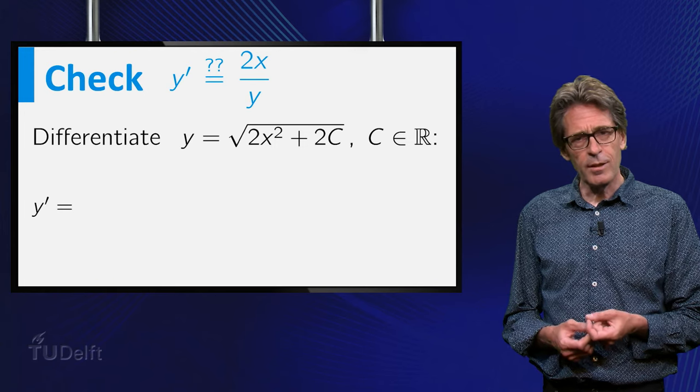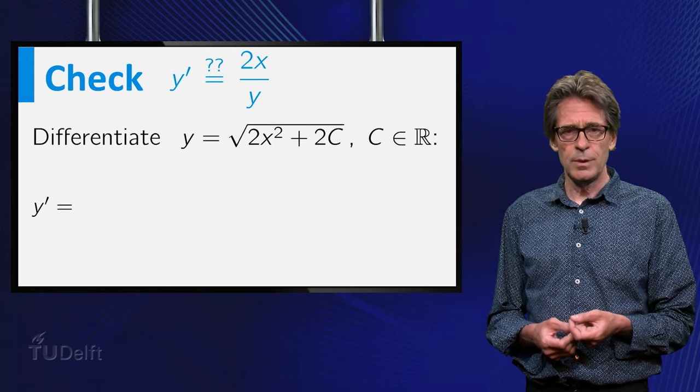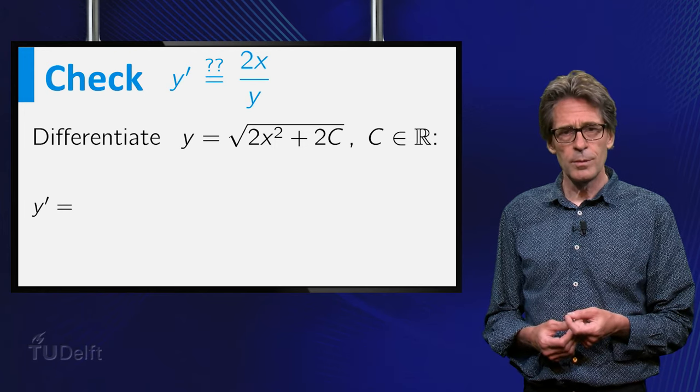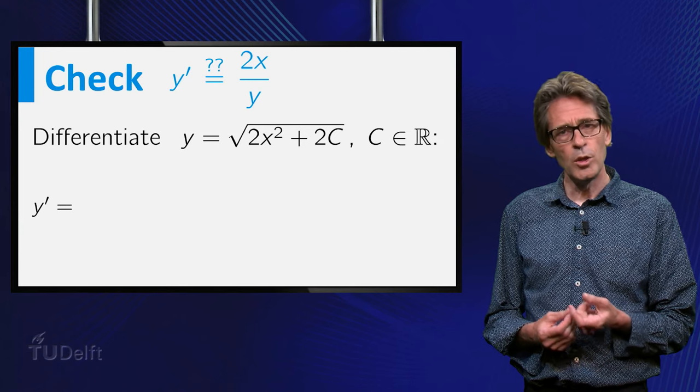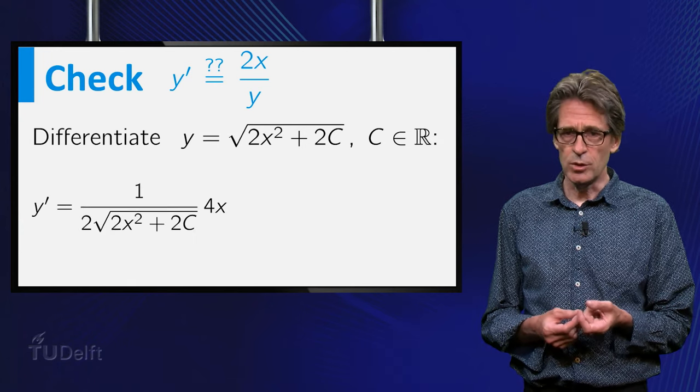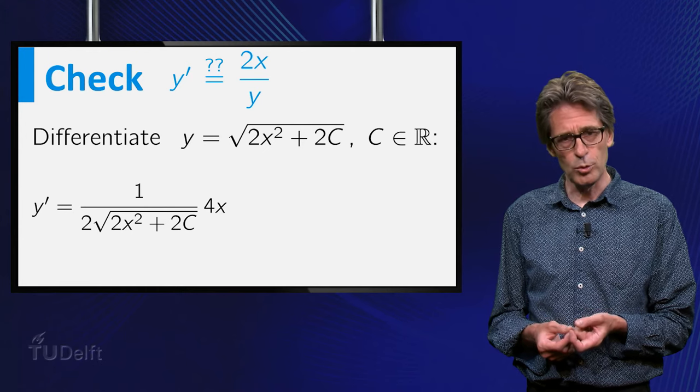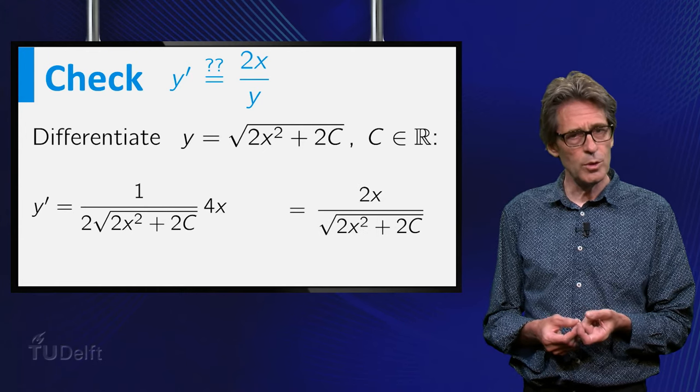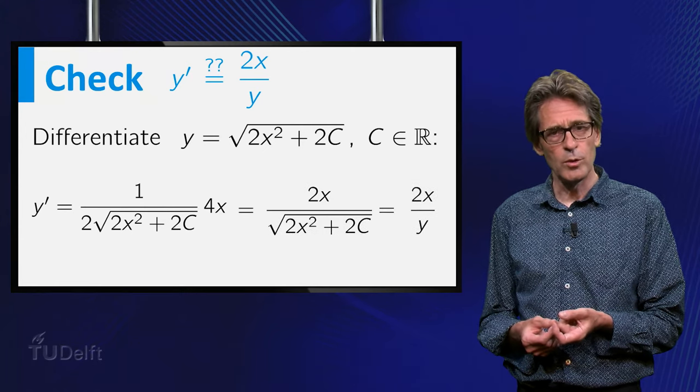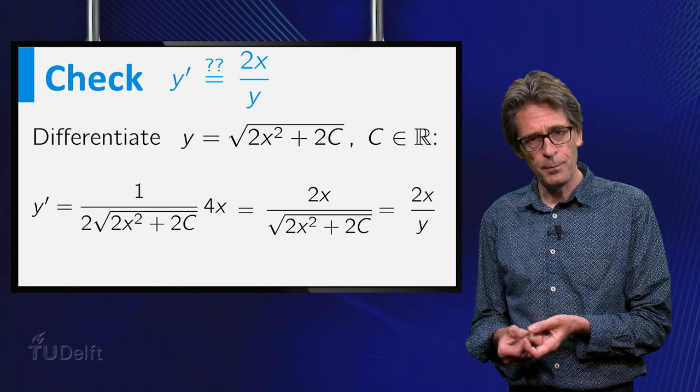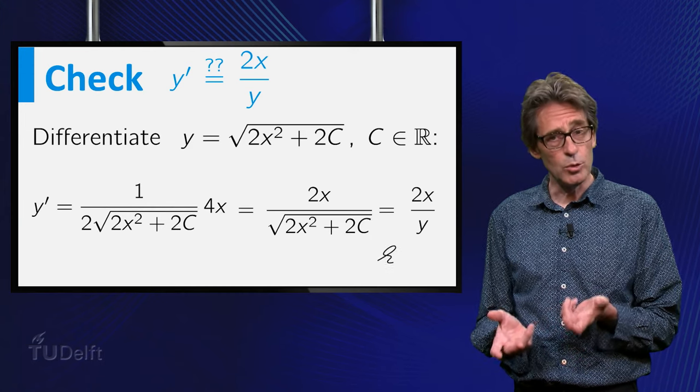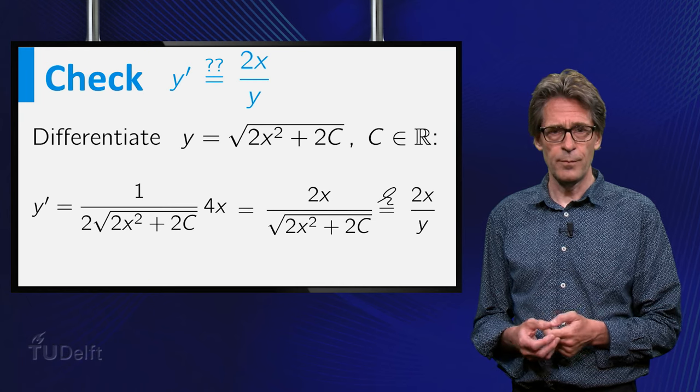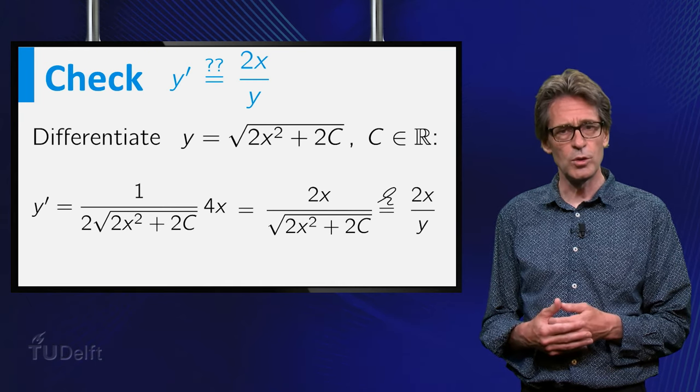Of course you can check that the solutions make sense. Using the chain rule and some rewriting, you will find that the derivative of y(x) is the square root of 2x squared plus 2c becomes 2x over the square root of 2x squared plus 2c, and this is indeed equal to 2x over y. Likewise for the solutions with a minus sign.